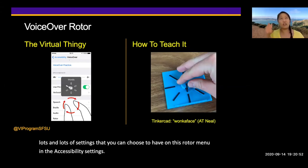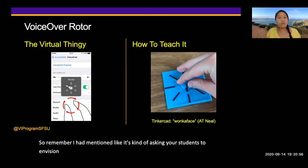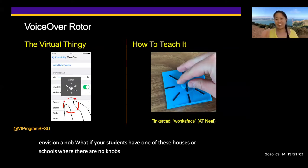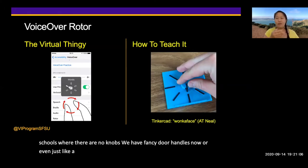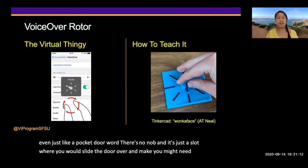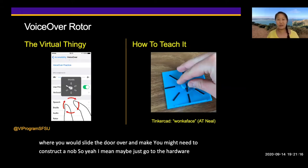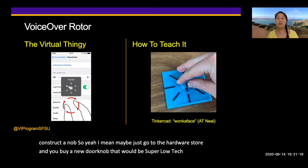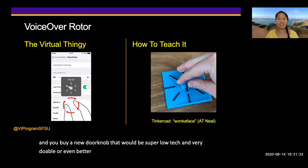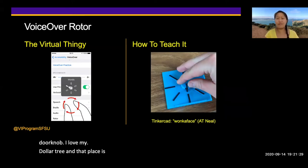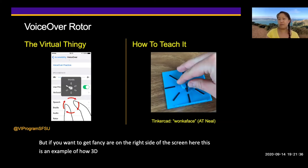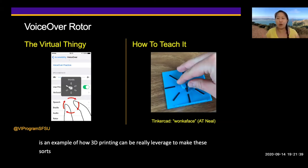As you turn the rotor, it clicks through the different menus — you can adjust speaking rate, skip to different forms, skip through words — there are lots of settings you can choose in accessibility settings. If you're asking students to envision a knob but they're in a house where there are no knobs, you might need to construct one. You can just go to a hardware store or dollar store and buy a cheapy doorknob — super low tech and very doable.